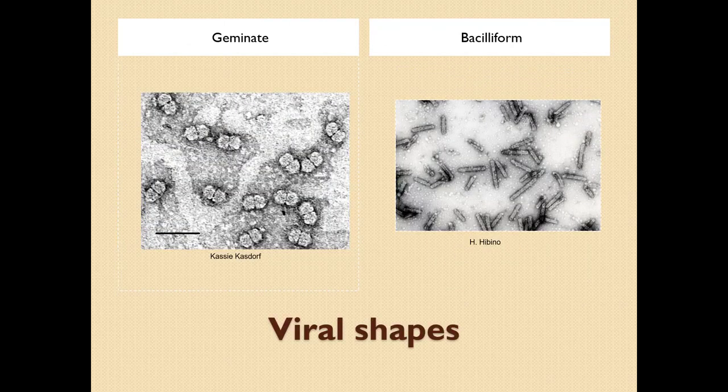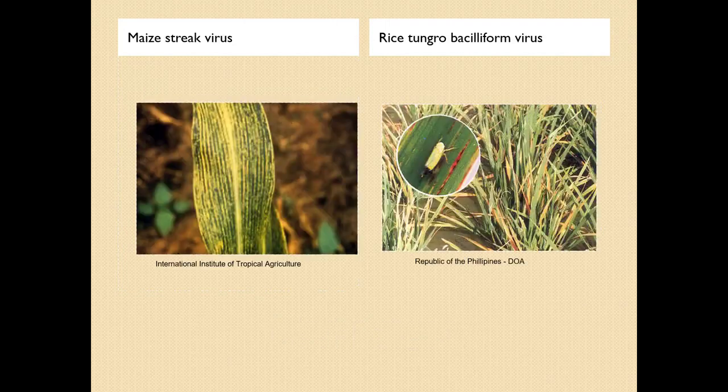Here we have geminate and bacilliform shapes. Bacilliform virus occurs on rice, and the geminate type is represented by maize streak virus — and this is what these look like. You can see a leafhopper here on the right that spreads this disease.